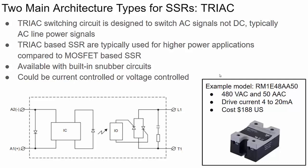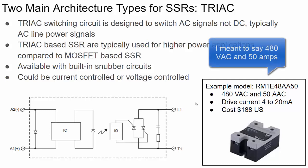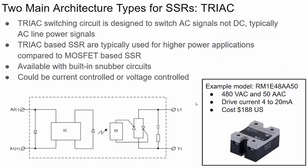As an example of a TRIAC-based high-powered solid state relay, here's a model that can handle up to 400 volts AC RMS and 50 volts AC RMS, requiring only 4 to 20 milliamps of drive current. However, it's not cheap — it's almost $200.